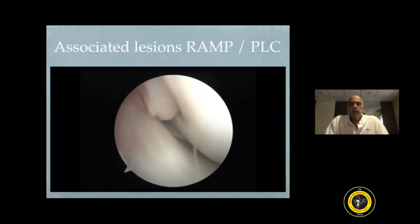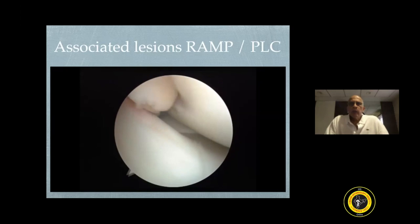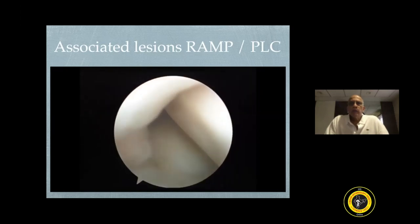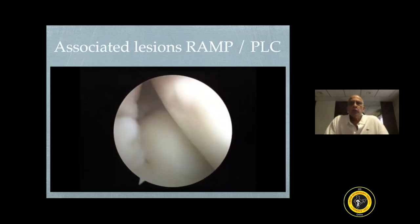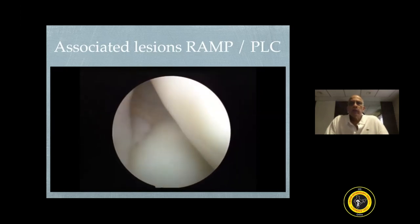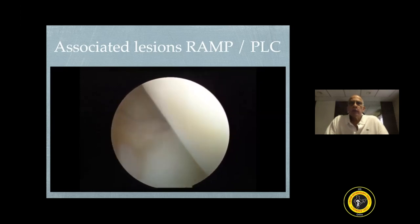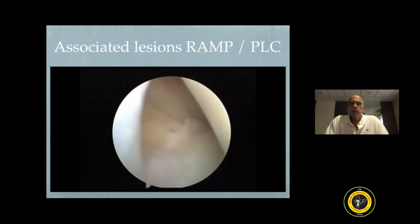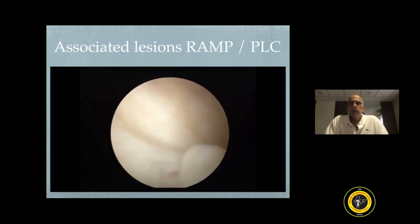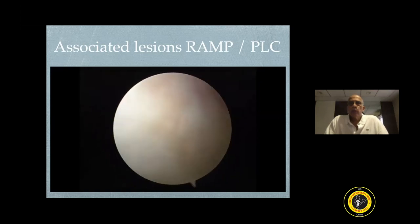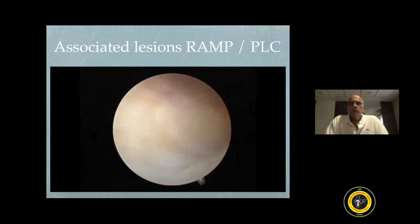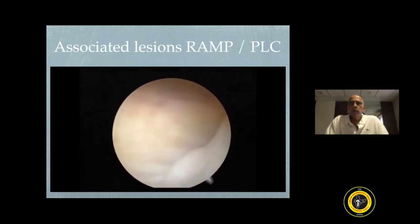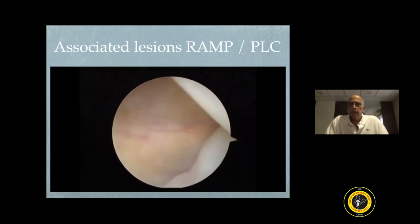Here is a video which shows how to approach the ramp lesion. One gently passes the scope between the medial femoral condyle and the posterior cruciate ligament and approaches the posteromedial corner. Ramp lesions are basically menisco-capsular separations which are seen in this area.